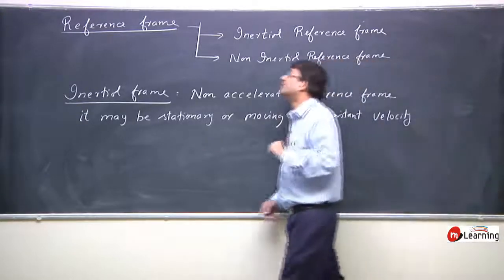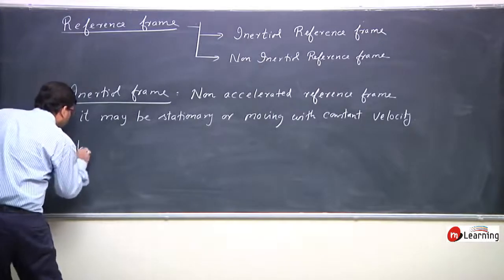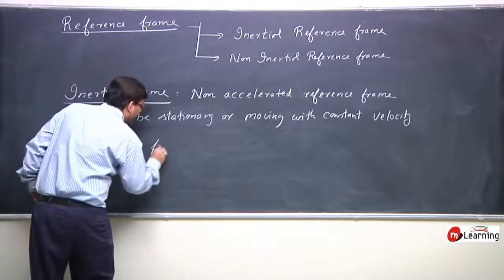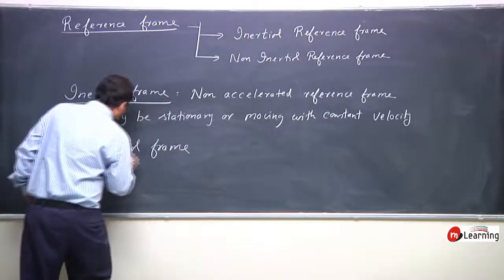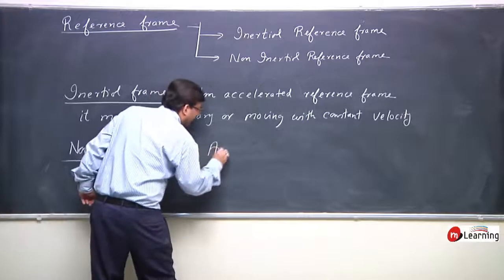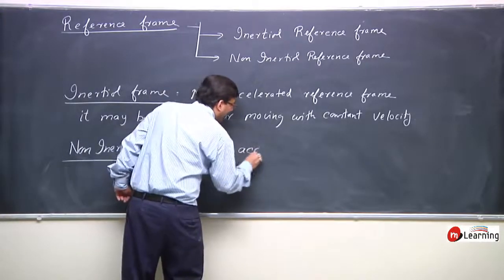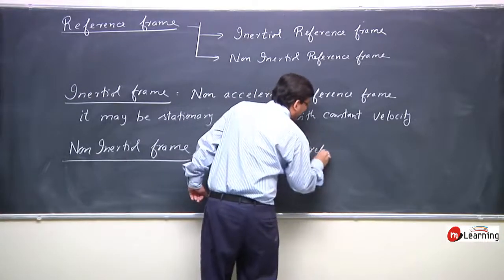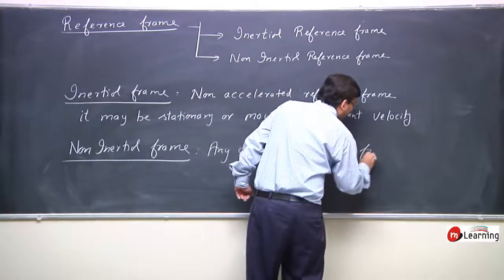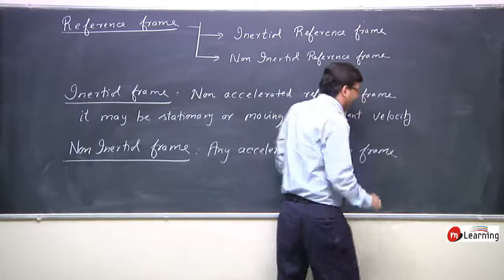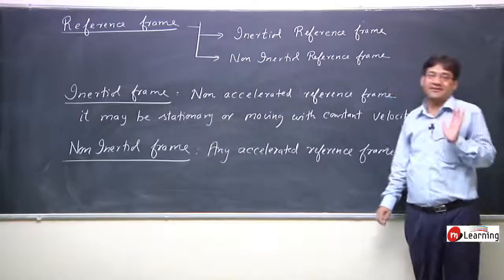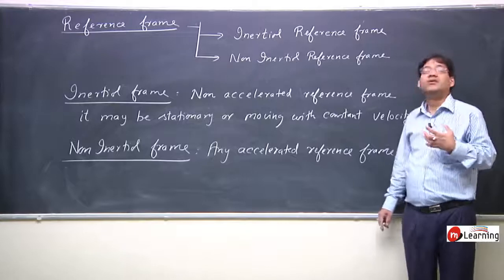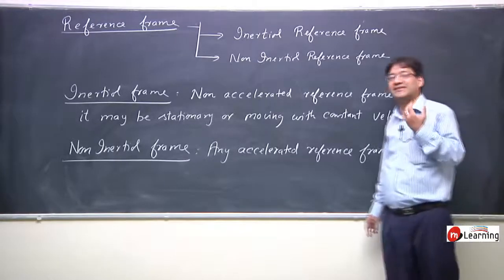If a reference frame is completely stationary, we call it an inertial reference frame. If the reference frame is moving with constant velocity — its velocity not changing, fixed direction — in that case as well the reference frame is an inertial reference frame. It is non-accelerated.